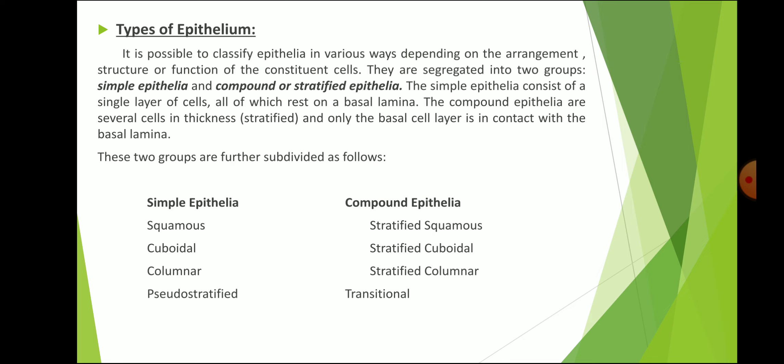The simple epithelium consists of a single layer of cells, all of which rest on a basal lamina. The compound epithelium is several cells in thickness — that is, stratified — and only the basal cell layer is in contact with the basal lamina. These two groups are further subdivided: simple epithelia into squamous, cuboidal, columnar, and pseudostratified; compound epithelia into stratified squamous, stratified cuboidal, stratified columnar, and transitional.